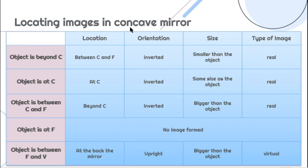This is for the concave mirror or converging mirror. Because the image is bigger when the object is between F and V, the concave mirror is used in dentistry to get a bigger image of the teeth, and also in makeup mirrors to see a larger, clearer view of the face.